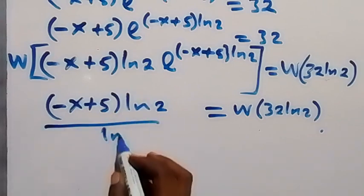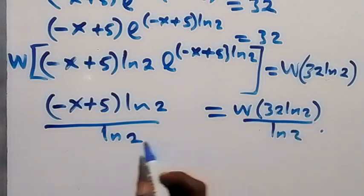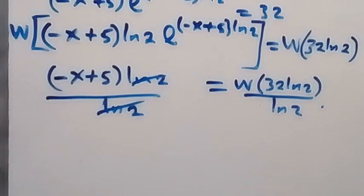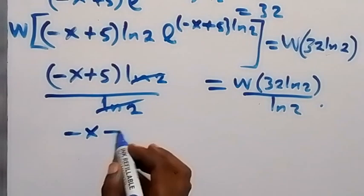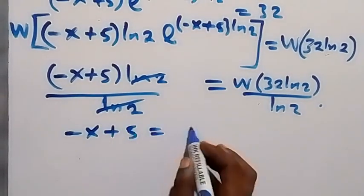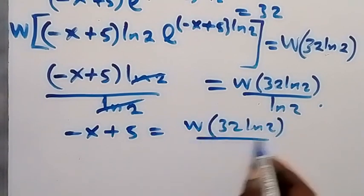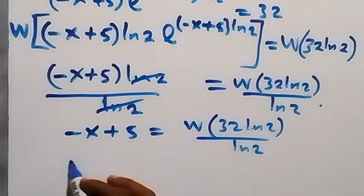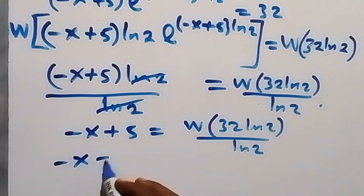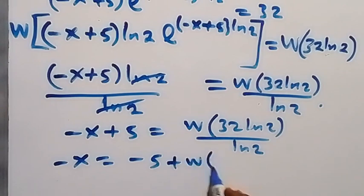Dividing both sides by ln 2, the ln 2 on the left cancels, and we have minus x plus 5 equals W of 32 ln 2 over ln 2. Taking plus 5 to the other side gives minus x equals minus 5 plus W of bracket 32 ln 2 over ln 2.